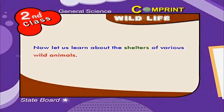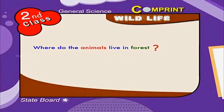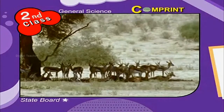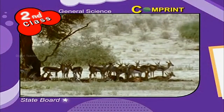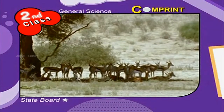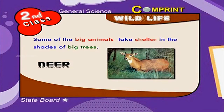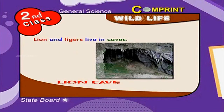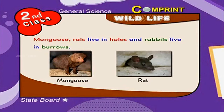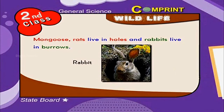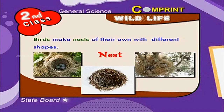Now let us learn about the shelters of various wild animals. Some of the big animals take shelter in the shades of big trees — they are elephant, giraffe, and deer. Lions and tigers live in caves. Mongoose and rats live in holes, and rabbits live in burrows. Birds and ants make nests of their own with different shapes.